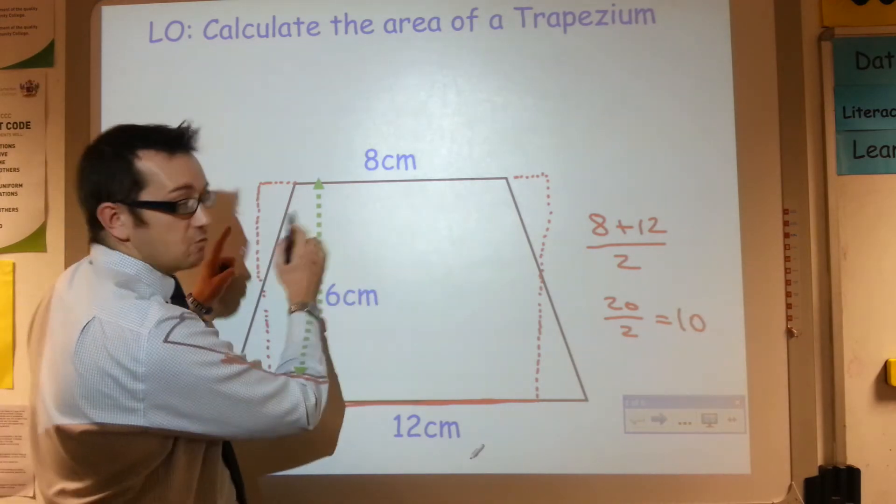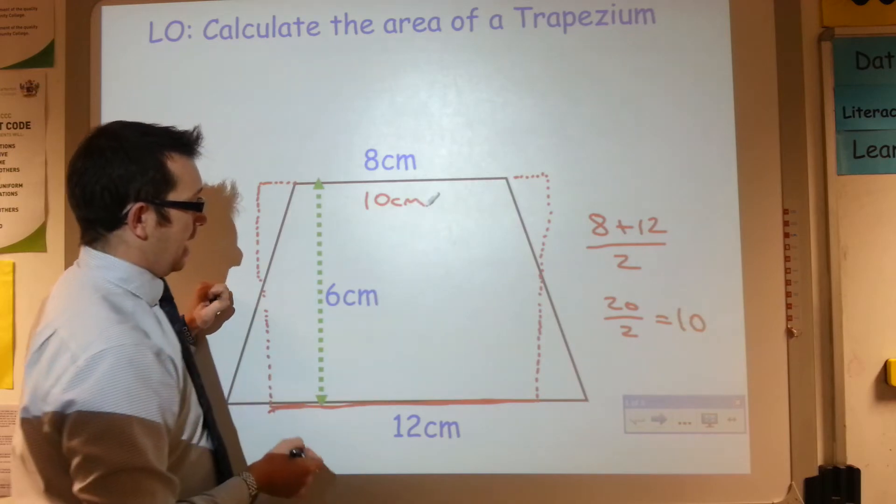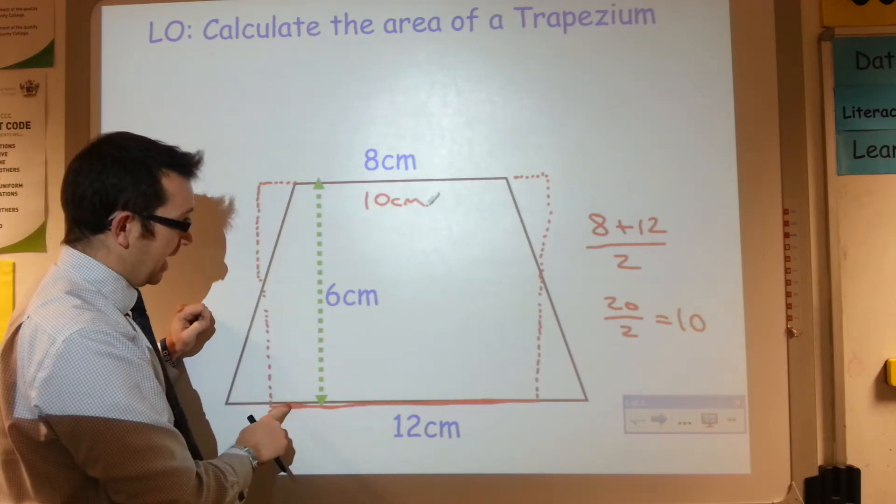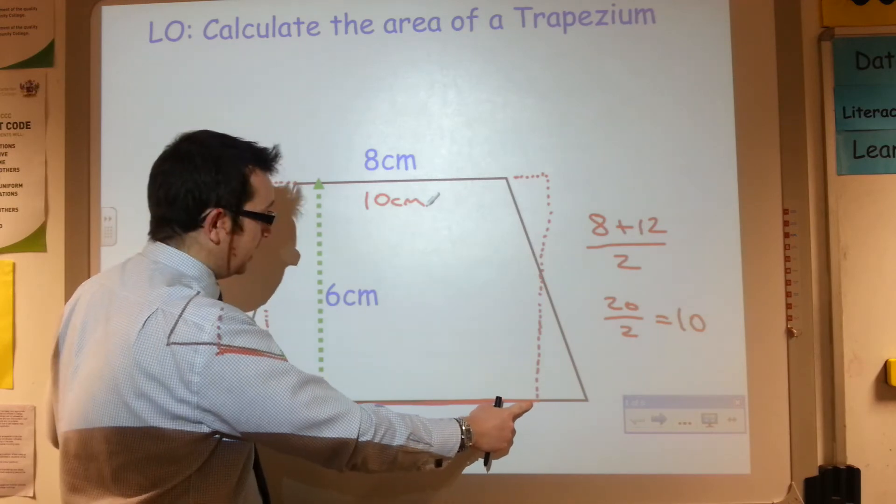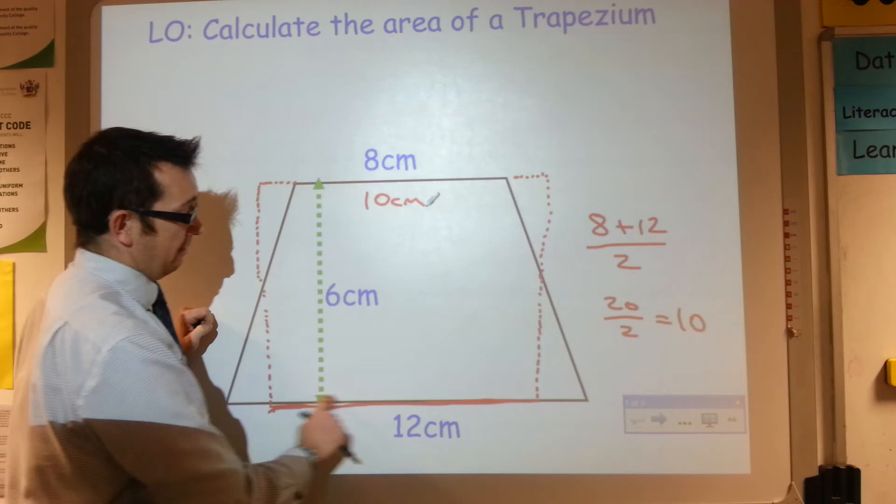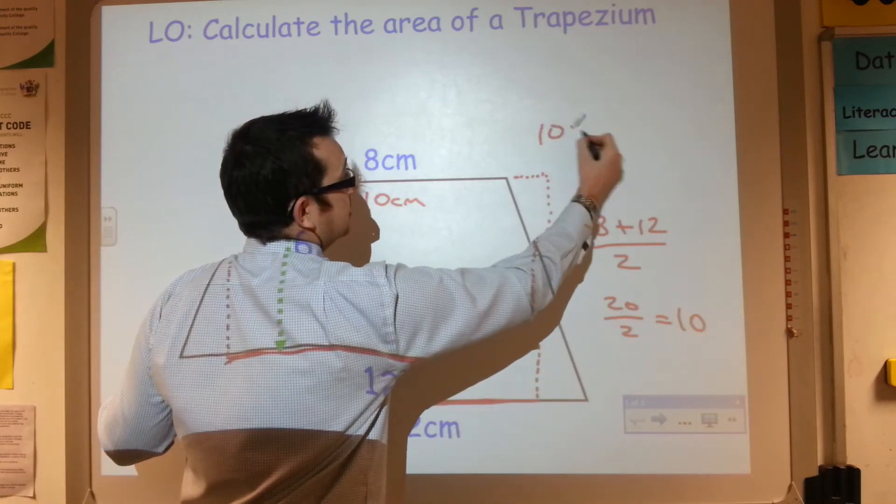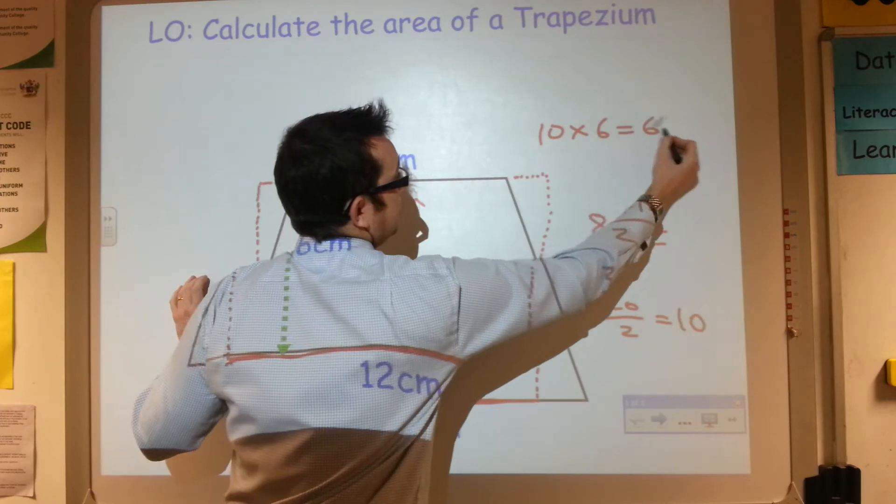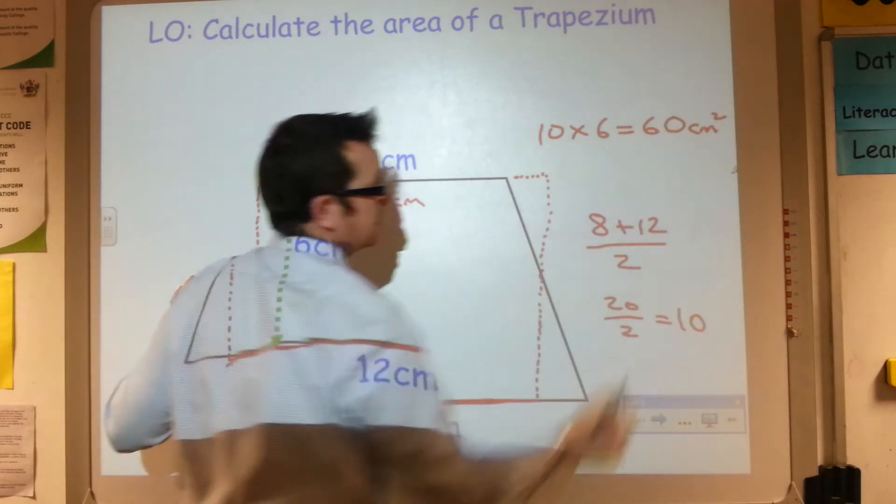So I now know that this length of this red rectangle is 10 centimeters. And so if I look at the red rectangle now, I know it's 10 centimeters length, the base, and its height 6 centimeters. So all I now need to do is 10 times 6. So 10 times 6 is 60, and it's centimeters squared because it's area.